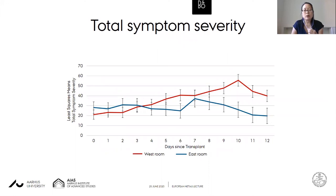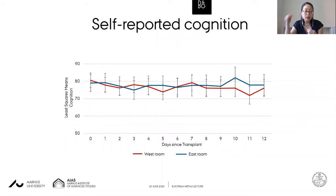We found that patients in the west-facing dimmer rooms had definitely worse fatigue levels over time compared with those in east-facing rooms. Even when we evaluated total symptom severity, we saw a very similar trend. However, when we looked at self-reported cognition, we did not see any differential effects based on room assignment — very similar to our earlier light box work when we looked at cognition.